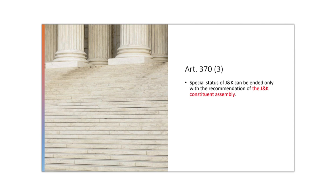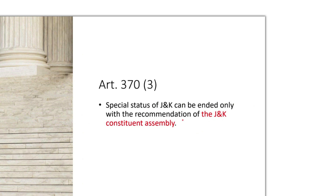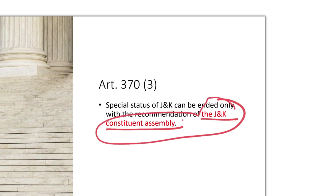What does Article 373 say? It says the special status of Jammu and Kashmir can be ended only with the recommendation of the Jammu and Kashmir Constituent Assembly. Most people found this was a difficult provision and did not know how to overcome it because the Jammu and Kashmir Constituent Assembly no longer existed.